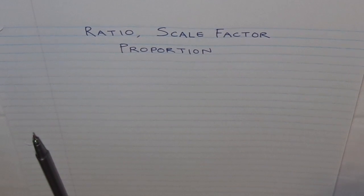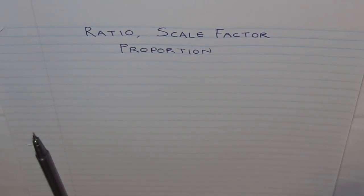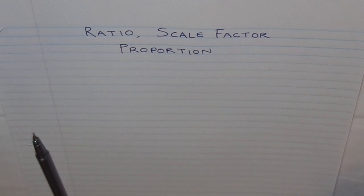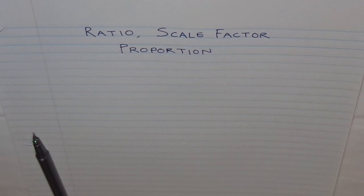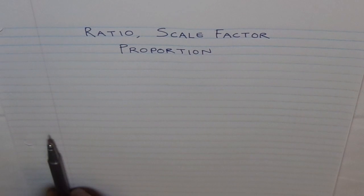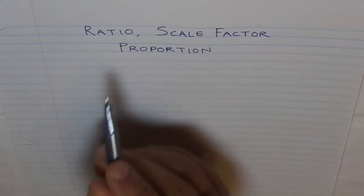Let's talk about three things: ratio, scale factor, and proportion. We have videos on ratios and also on scale factor and proportion, but now let's see them together — how they are similar, how they are related, and how they are different.